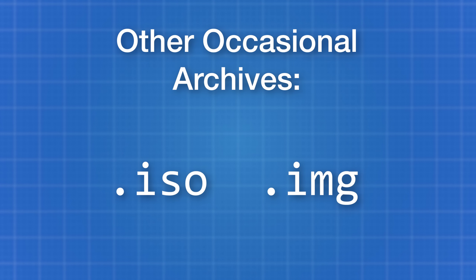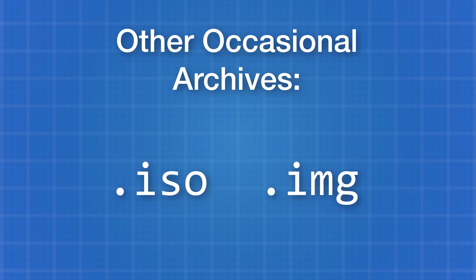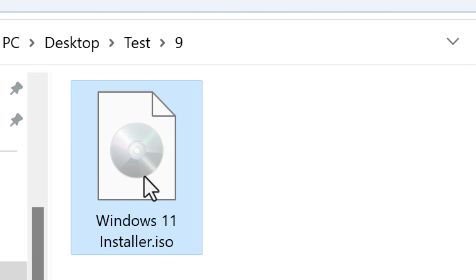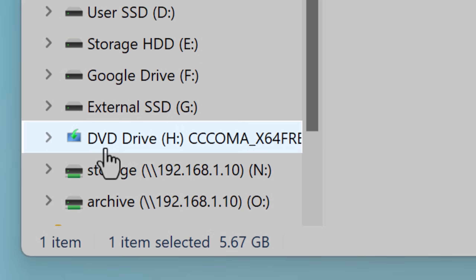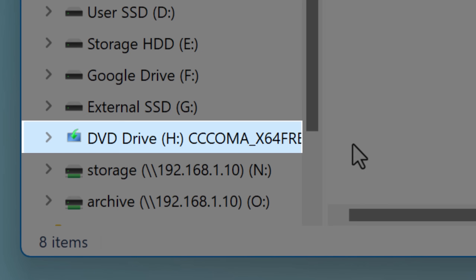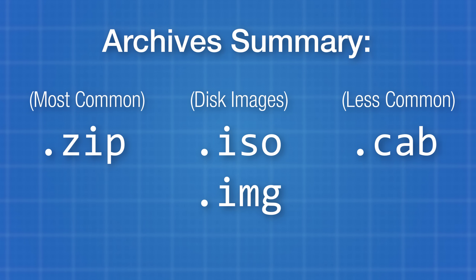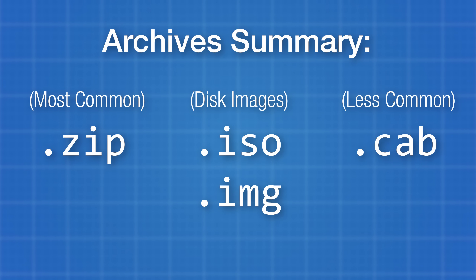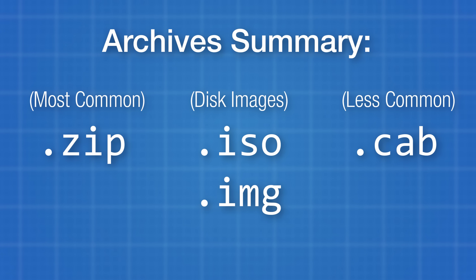A couple of other archive formats most people aren't familiar with are ISO and IMG, or image files — these are disk image files. You can literally right-click and mount these and they'll show up as a virtual disk on your computer. In recent years hackers have been using these more and more, so if you see this type of file as an unusual attachment, just be aware of it. Finally, there's also cabinet files, which are relatively uncommon for malware but still an archive to watch out for.